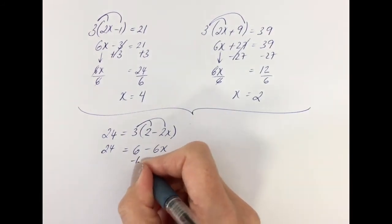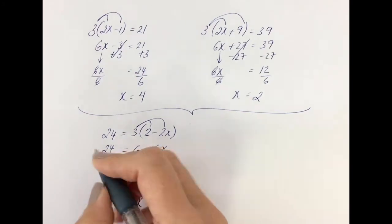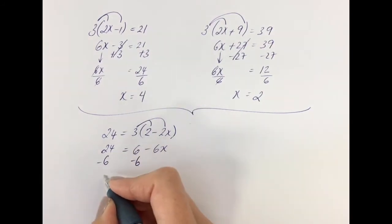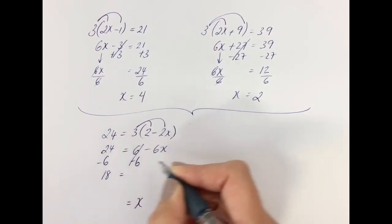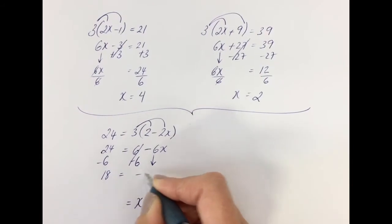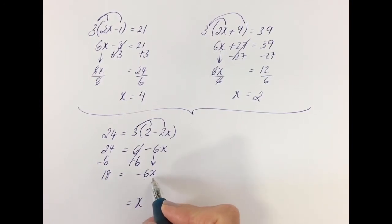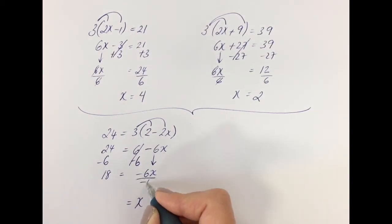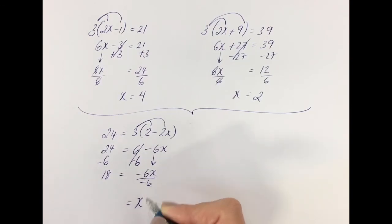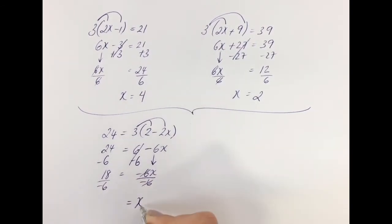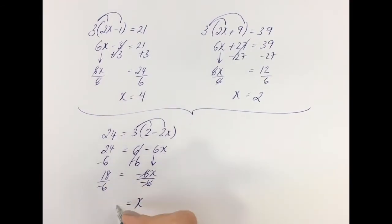If I take away 6 on the right-hand side of the equal sign, I've got to take away 6 from the left-hand side. 24 take away 6 is 18. What's left on the right is minus 6x — in other words, minus 6 times x. To get rid of minus 6 times x, we divide by minus 6. Minus 6x divided by minus 6 is 1x. If I divide by minus 6 on the right, I've got to divide by minus 6 on the left. 18 divided by minus 6 is minus 3.